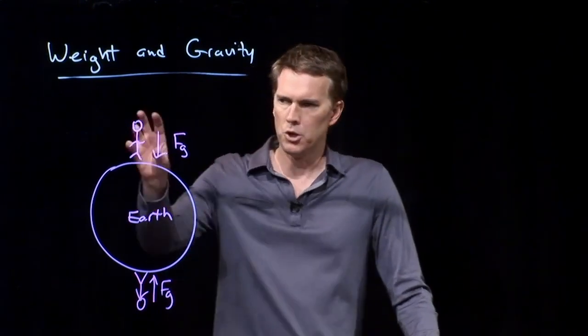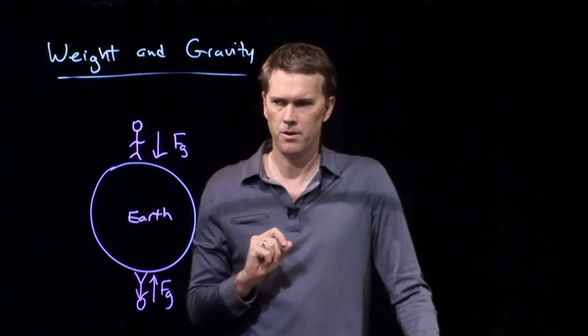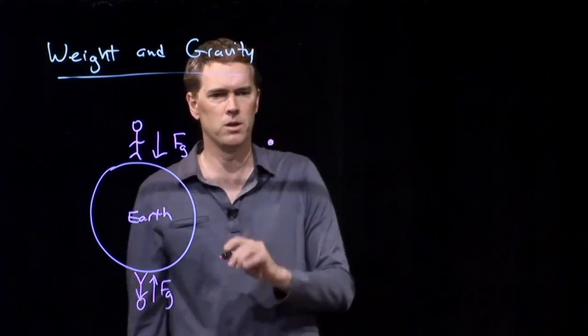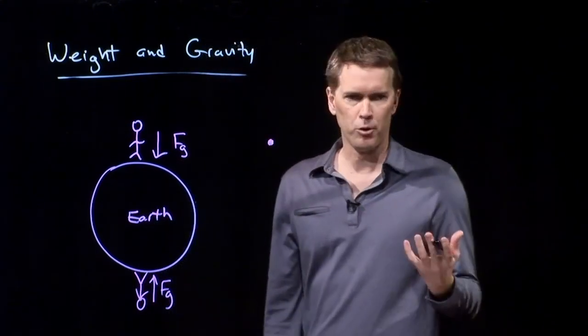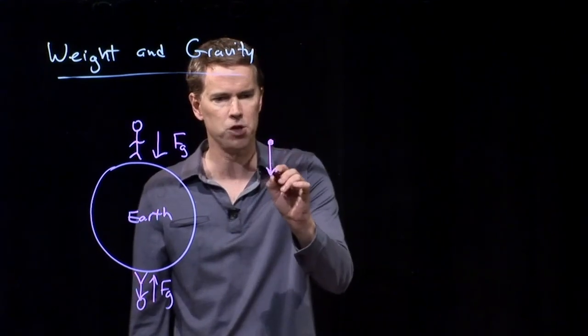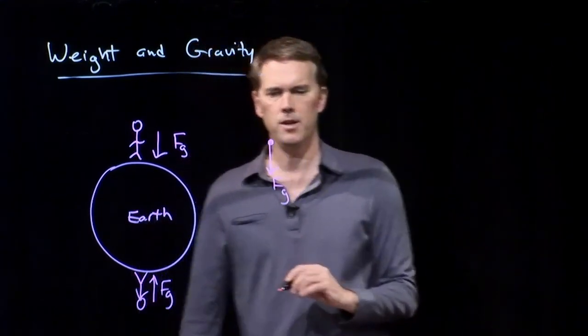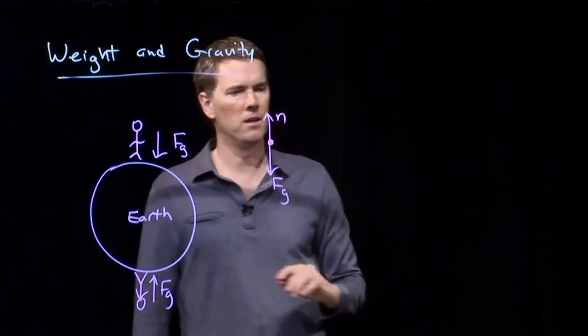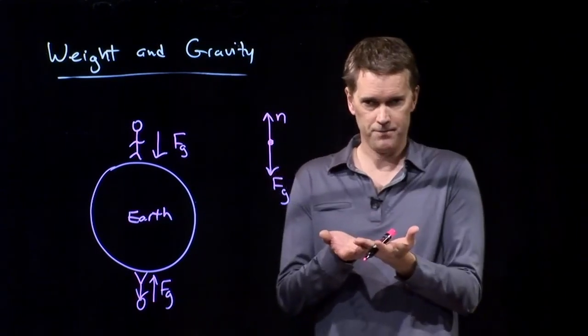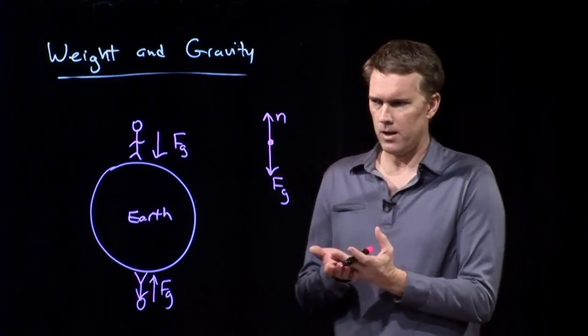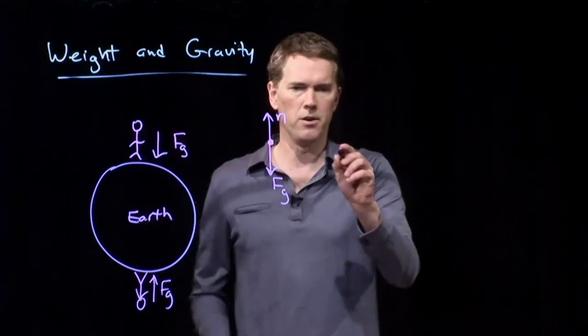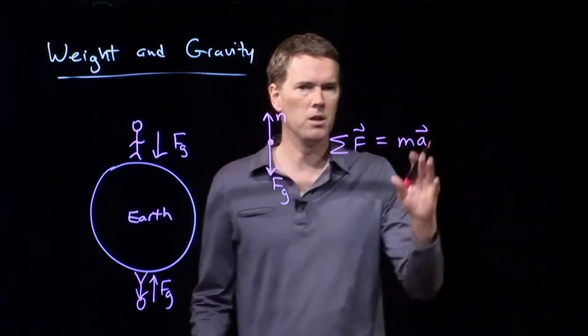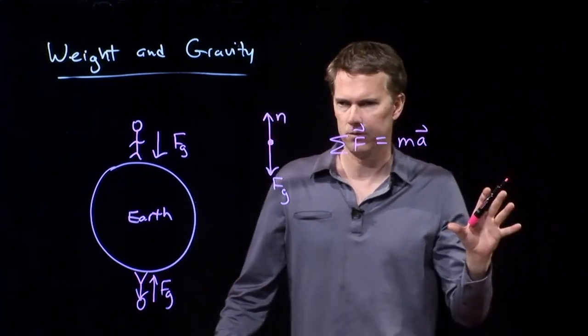Now when we think about you standing here on the Earth, how do we draw a free body diagram for that? Well, we make you a dot, and then we identify the forces that are acting on you. You've got F sub g due to gravity, and then you have the normal force, N, which is the Earth pushing back up on you. And what we know is if you are stationary, then we can say the sum of the forces equals the mass times acceleration. The acceleration is going to be zero if you're stationary.